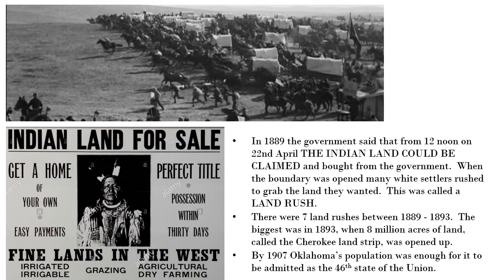There were seven land rushes between 1889 and 1893. The biggest was in 1893, when 8 million acres of land called the Cherokee land strip was opened up for white settlement on the Indian territories. By 1907, Oklahoma's population — remember, this had been exclusively Indian territory — was large enough for it to be admitted as the 46th state of the Union, as you needed a certain population level before a territory could be considered for statehood.